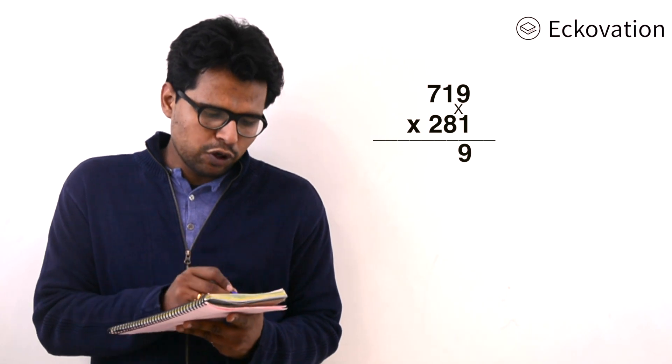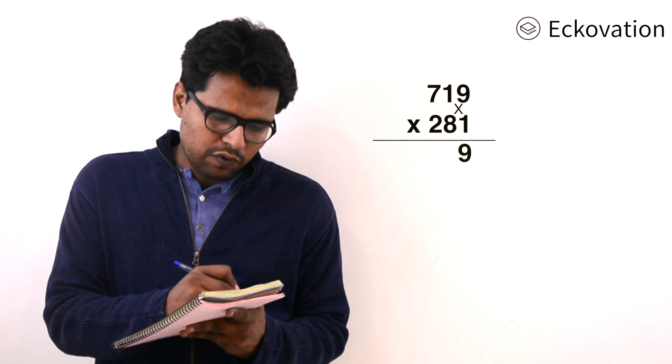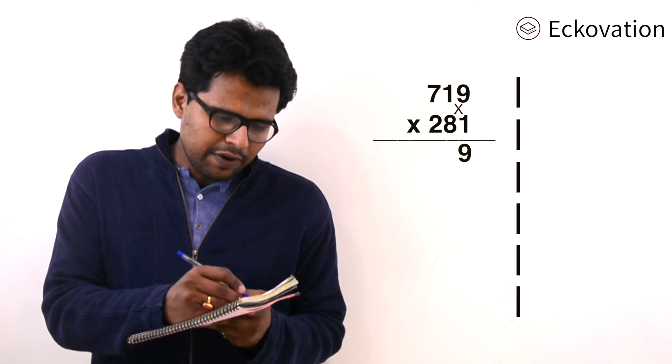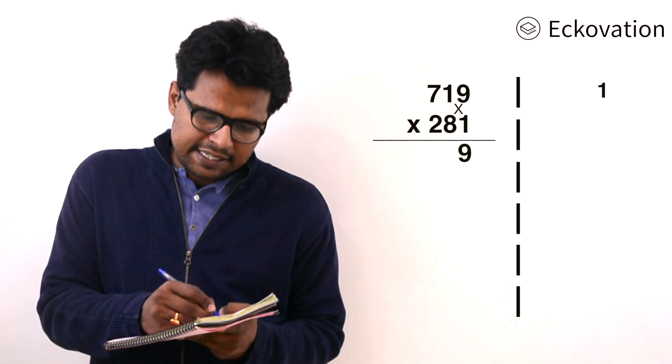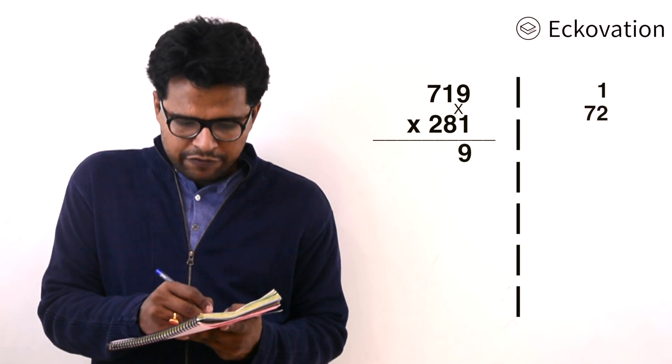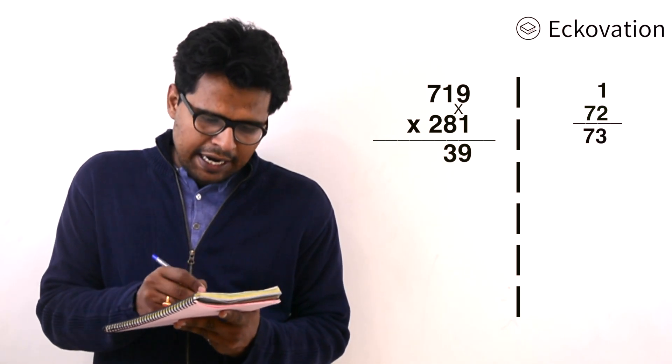If we go to the 8, we have to multiply 8 and 9, and 1 and 1. We are going to write the summation. 1 into 1 is 1, 8 into 9 is 72. If we sum it, we get 73. We'll write 3 here and carry 7.